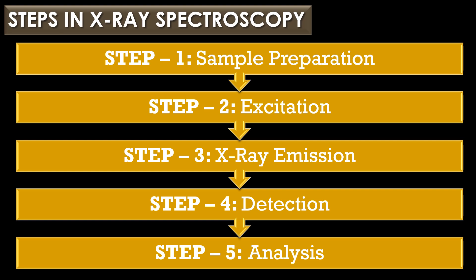The third step is X-ray emission: as higher level electrons drop to fill the vacancies, they emit X-rays that are characteristic of the elements present. The fourth step is detection: the emitted X-rays are detected and their energy or wavelength is measured. The fifth and final step is analysis: the resulting spectrum is analyzed to determine the elemental composition, chemical state, or structure of the material.